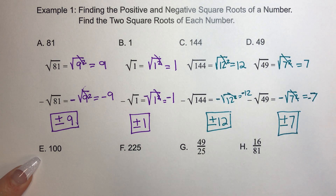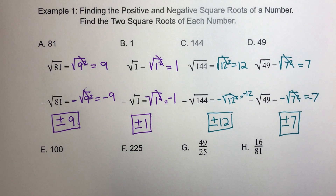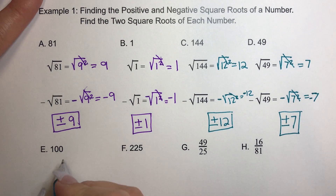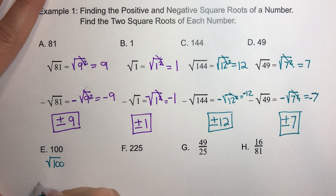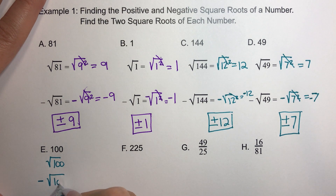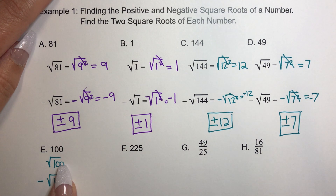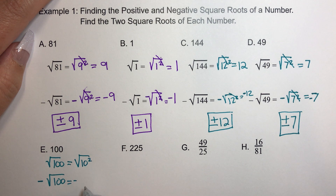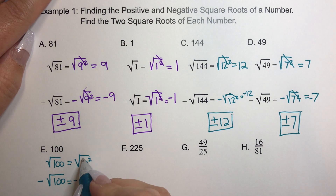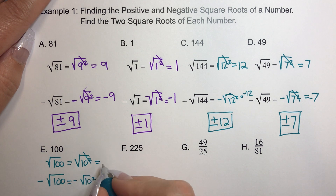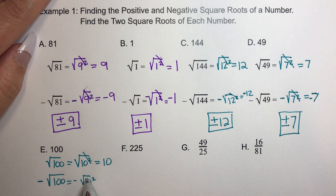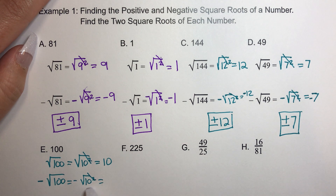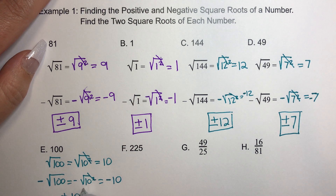Let's come down here. We are going to be finding the positive and negative square roots of 100. So the square root of 100 — that's the positive one — and negative square root of 100 — that's the negative one. We know 100 is a perfect squared number, which is the same thing as 10 squared. The square root and the squared are inverse operations, so they cancel each other out — we're left with 10. And the other square root and squared cancel each other out — we're left with negative 10. Our answer is plus or minus 10.